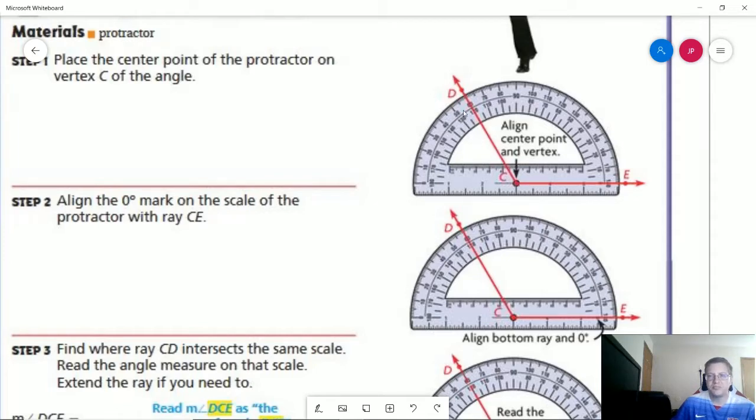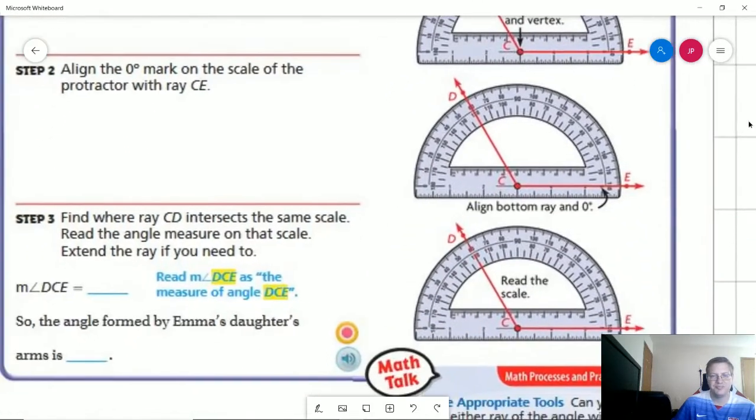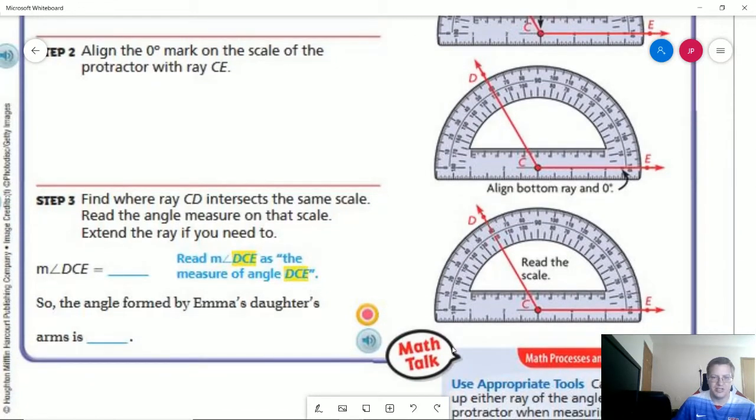You're going to notice on most protractors that there's going to be a top and bottom. The top part for this one is measuring around this direction and so it would be 60 degree mark if we were starting from here and going to here. However, we're not doing that. So we would look at the bottom mark and that starts with zero here and then goes all the way around to here for 120, and so our answer for that one would be 120 degrees.